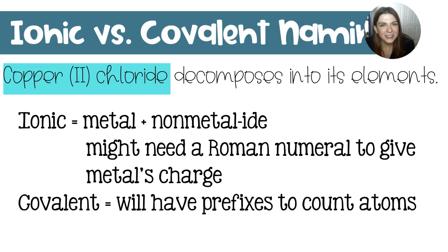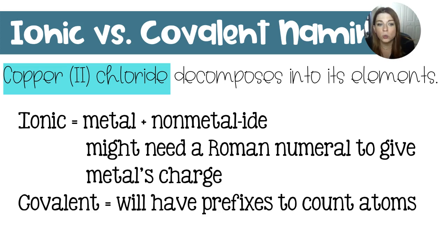In this example, we're working with an ionic compound, and I know that for a few reasons. Number one, copper is a metal and chlorine is a non-metal, so there is ionic bonding. I also have a Roman numeral in my chemical name, which will only happen if there are ionic bonds, which means I'm allowed to crisscross.